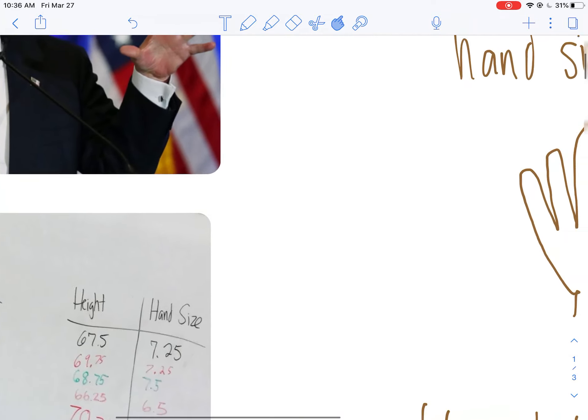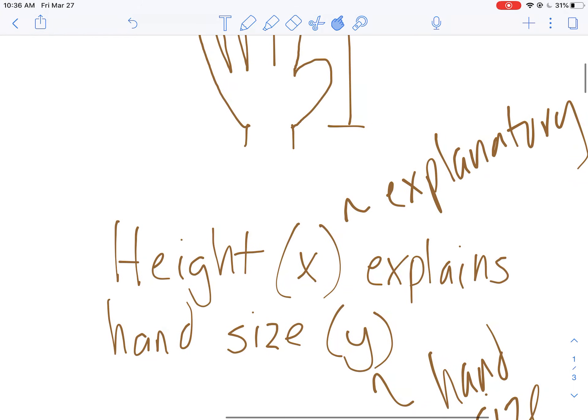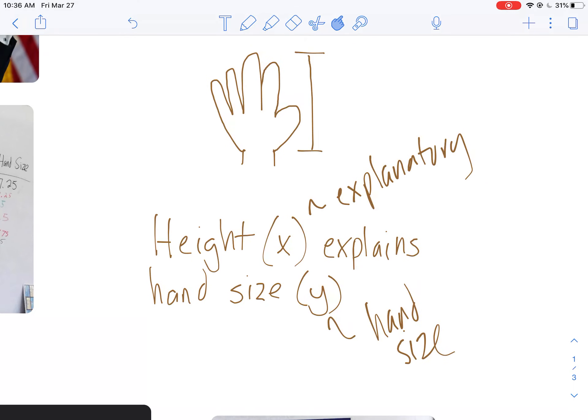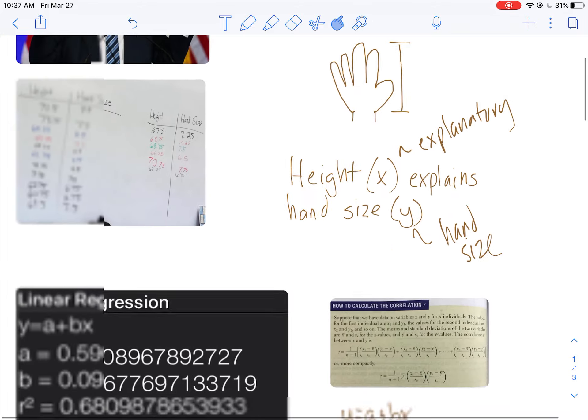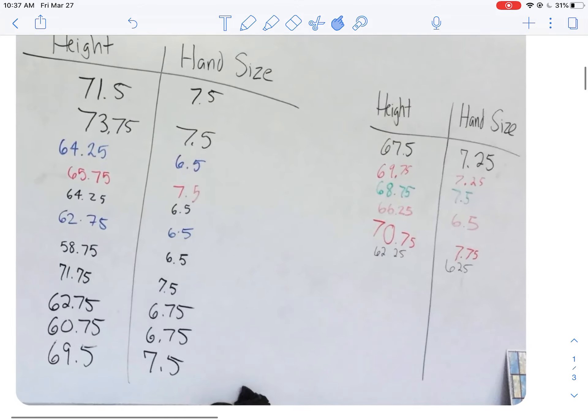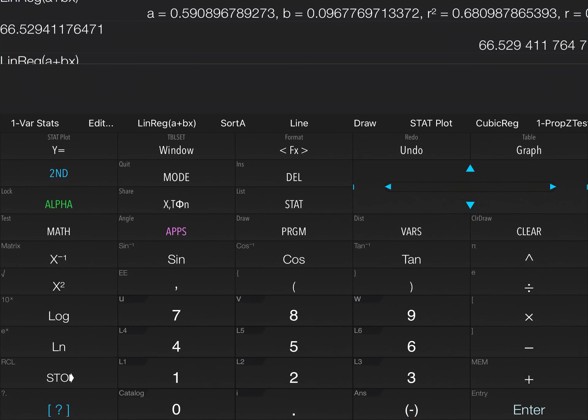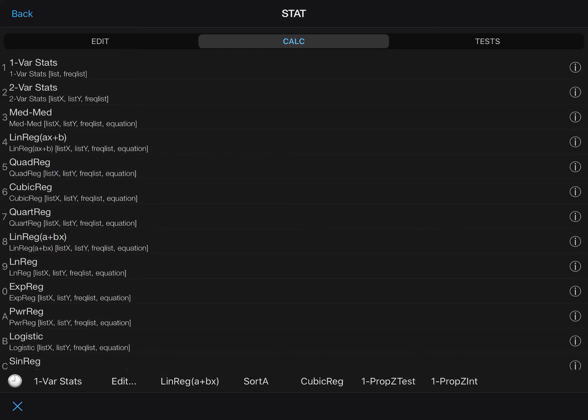So we have all these heights and we have hand sizes. They create ordered pairs and it's important to keep them together. So I'm going to establish height as my explanatory variable and hand size is my y, my response variable. Why? Because we want to see if height explains hand size. So that means height is going to be x, y is going to be hand size. So if you want to take a moment, maybe even pause this, you can enter the heights in list 1 and the hand sizes in list 2 on your TIs.